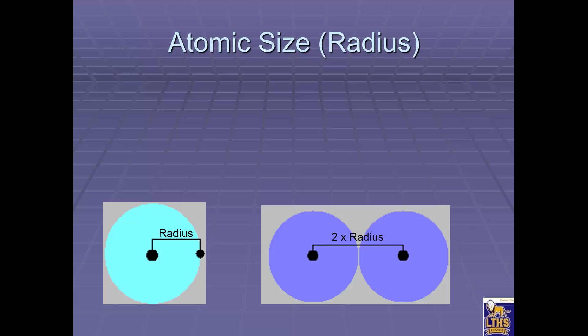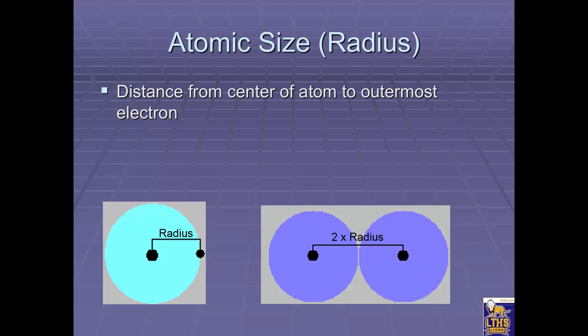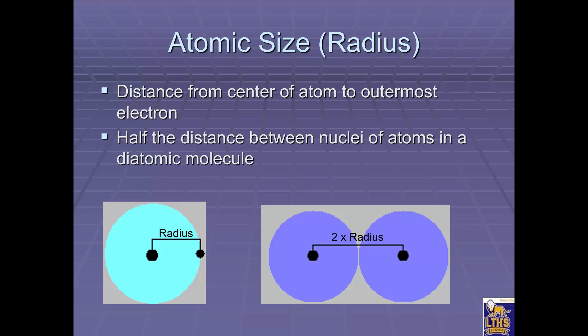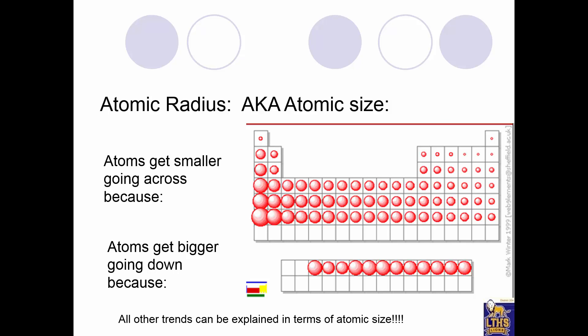Alright, atomic size. When we talk about atomic size, we're talking about the radius of an atom — the distance from the nucleus to the outermost electron. Another way to measure it is to think about two atoms bonded together: half the distance between their nuclei would be the atomic radius. We also call it atomic size.